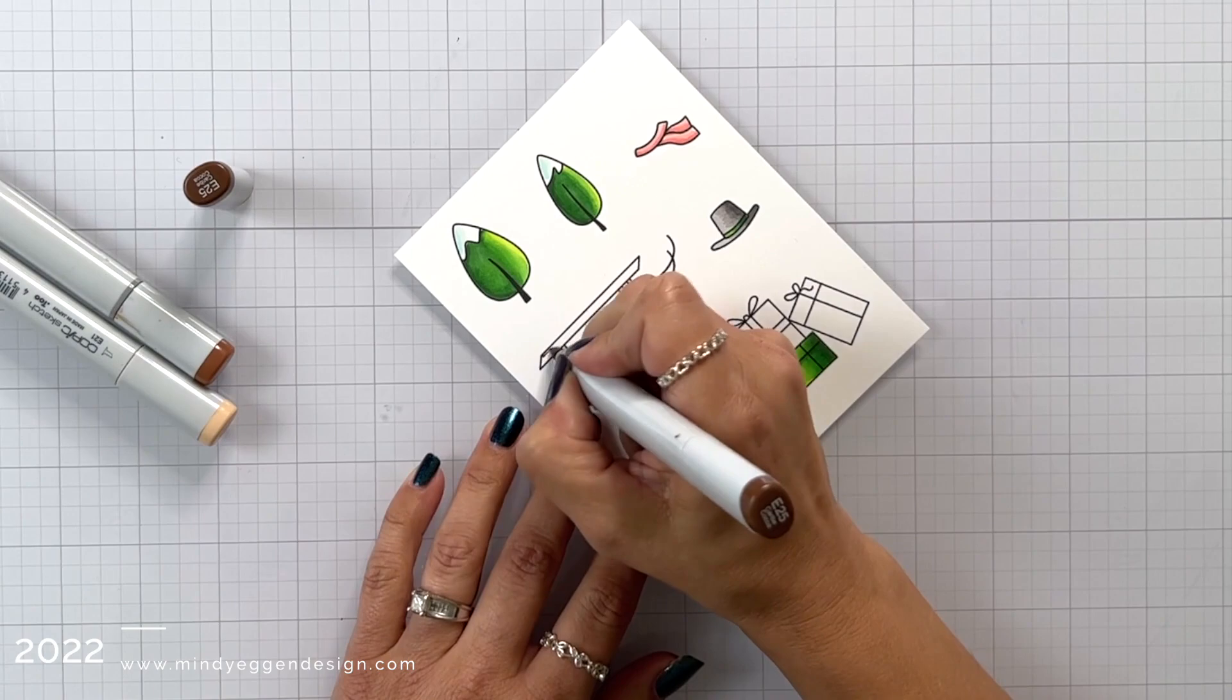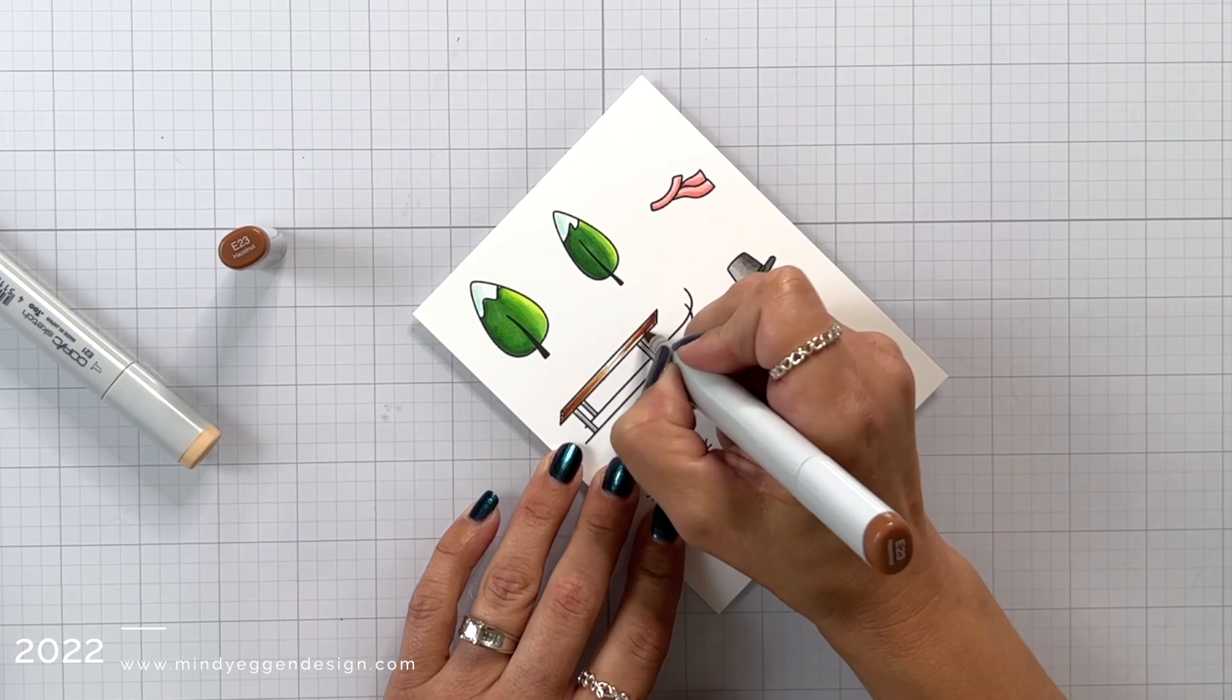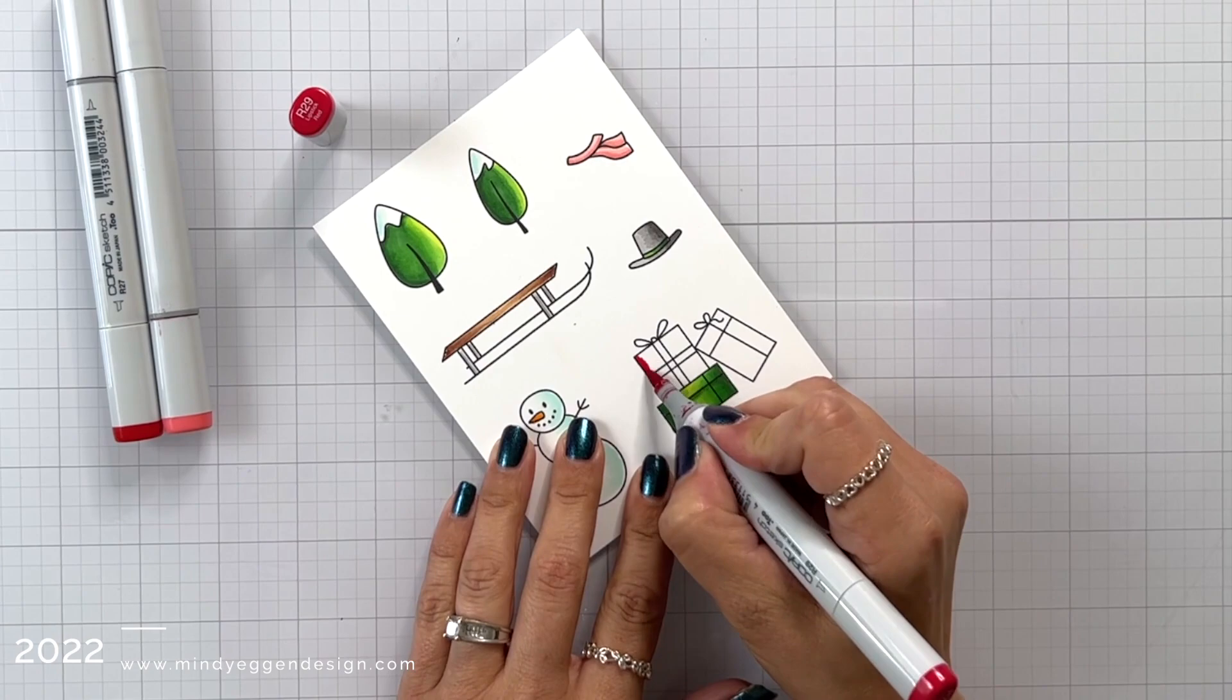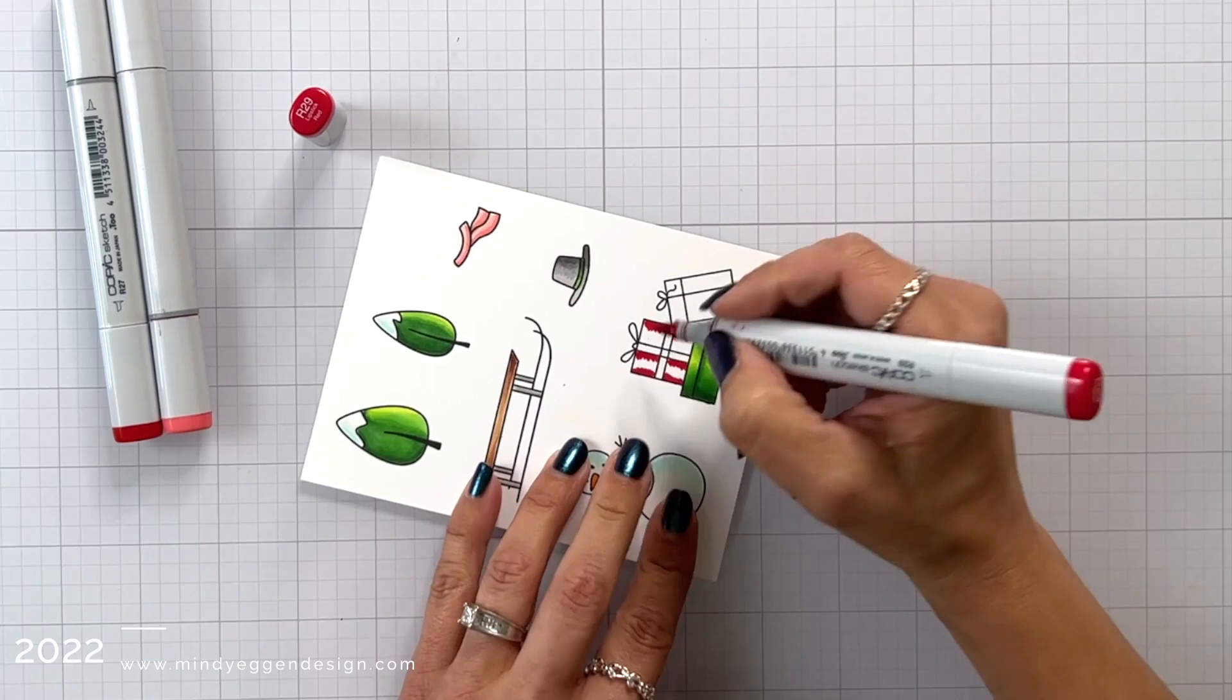I'm going to come back up to the sled and use some browns, E25, 23 and 21. Doesn't have to be real great. You could even just use one marker because most of it's going to get covered up by the presents anyway.